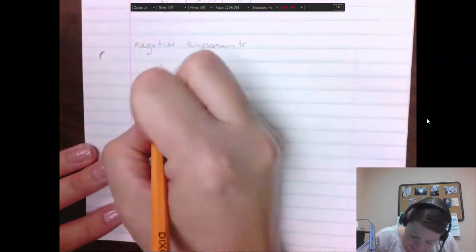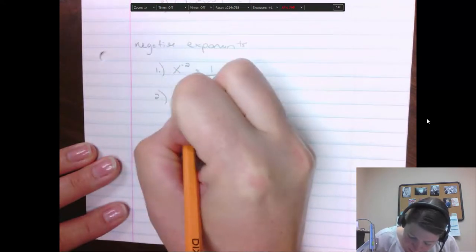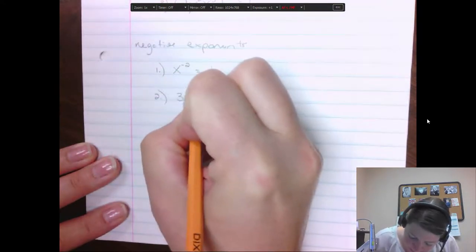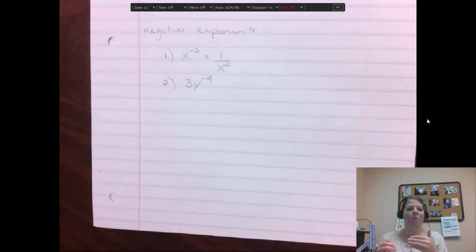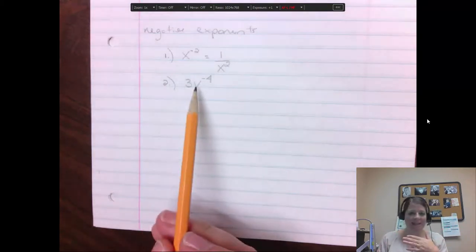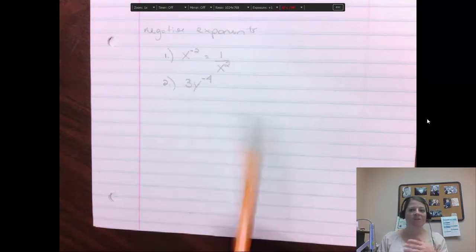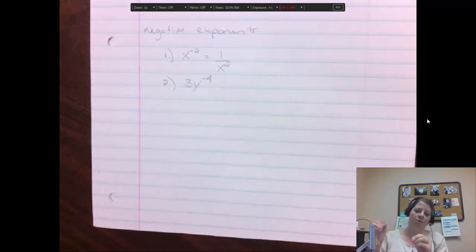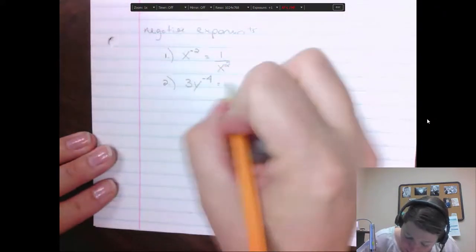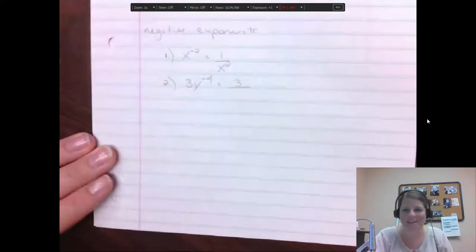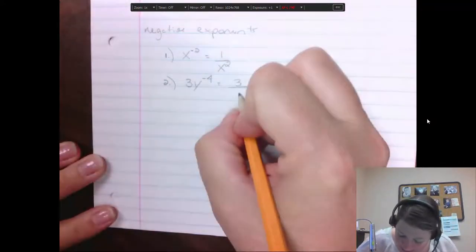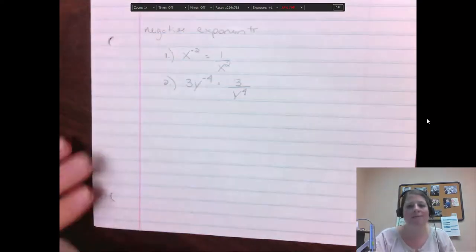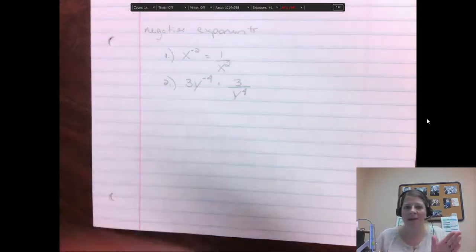So let's look at another one. What if I have, like, 3y to the negative fourth power? So what has a negative exponent? Only the y. The 3 is its own number. Remember, when we write them next to each other, we're being lazy, and there really should be a times symbol between each number or letter or term. So what we really want to do for this one is we're going to keep the 3 in the numerator because it doesn't have a negative exponent. But we'll take that y and we'll move it down, and it's going to lose the negative exponent but keep the number, so it becomes y to the fourth down in the denominator.